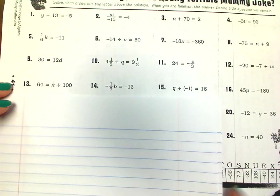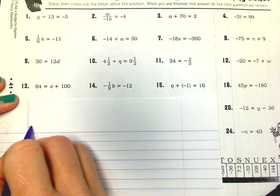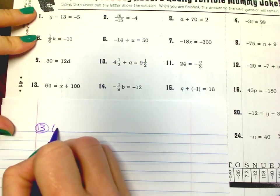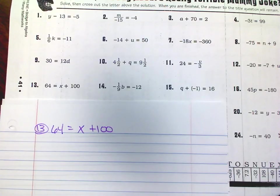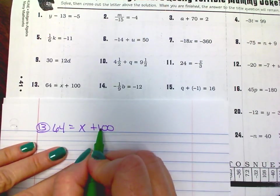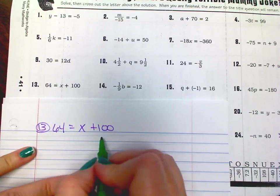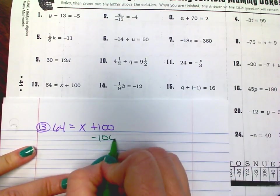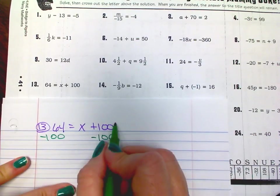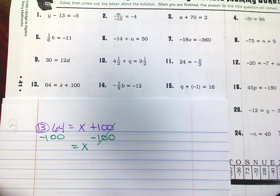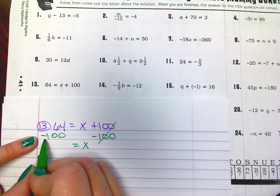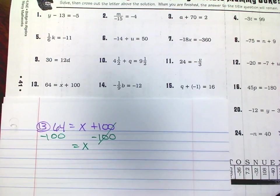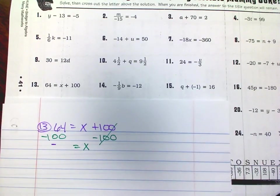Number 13. 64 equals x plus 100. Find your variable — I want to move everything away from it, so I want to move 100 over. I've got to cancel it out, so I'm going to subtract 100 from both sides. That cancels out. And again, you have a positive and a negative, so you're going to subtract those two and keep the sign of your larger number, which is the negative. Your answer will be a negative.